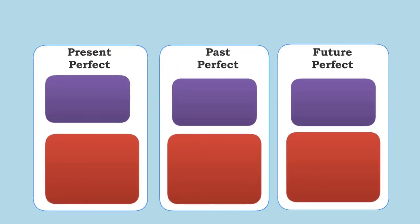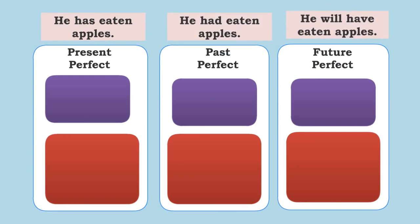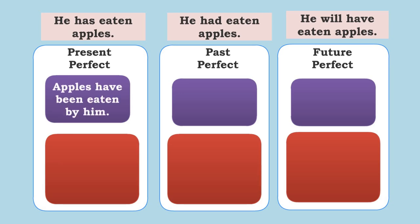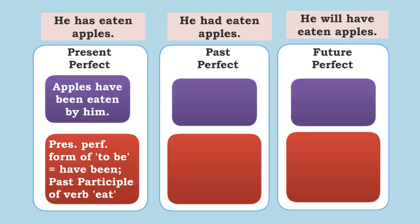Now let us go on to the perfect tenses: present perfect, past perfect, and future perfect. 'He has eaten apples' is present perfect — perfect always takes the 'to have' form. Let us transform that. 'Apples' will begin the sentence. 'Have' because it is present tense, then 'been' — we have to put the 'to be' form. So: 'Apples have been eaten by him.' Present perfect form of 'to be' is 'have been,' and the past participle of the verb 'eat' is 'eaten.'